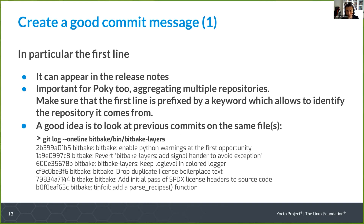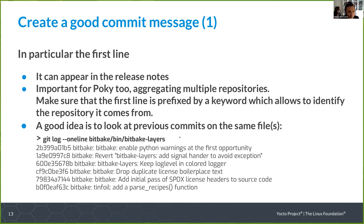The first line of the commit message is particularly important — it may appear in the release notes. It's also important for Poky because it aggregates multiple repositories, so make sure that the first line includes a keyword identifying the repository it comes from. A good idea is to look at previous commits for the same files using git log --oneline on the file you want to modify, so at least you're not diverging from previous patterns.